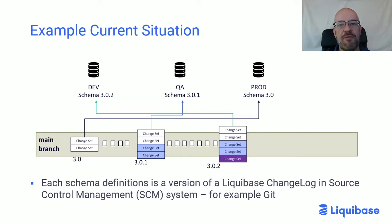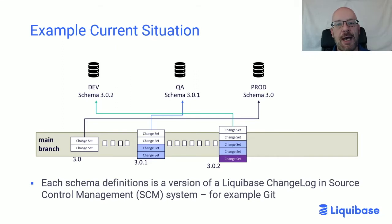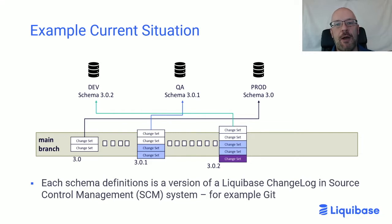So what happens if we have a fire in production — something's gone wrong, and we now need to put a hotfix change into production? Well, because I'm using source code and because I'm using Liquibase, I can do this in a very straightforward way that's very safe and controlled, and it guarantees that I don't get a regression or some other problem at some later point in time.